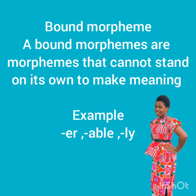Bound morphemes are morphemes that cannot stand on their own to make meaning. Examples: '-er,' '-able,' and '-ly.' We will get to know why these are examples of bound morphemes.